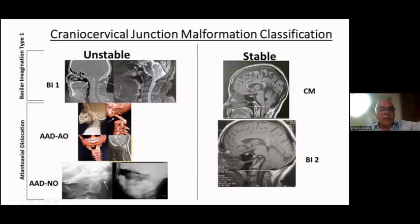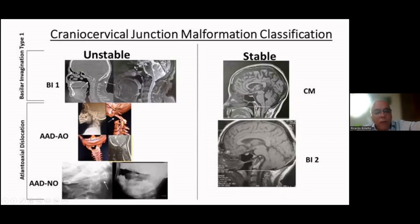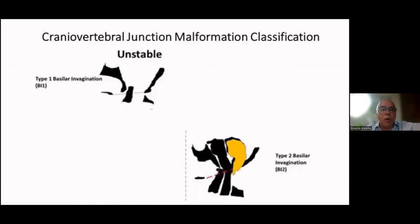In the stable branch, we can divide into all forms of Chiari malformations and type 2 basilar invagination or type B. Here are examples of type 1 basilar invagination in which the assimilation of the anterior arc of atlas is the predominant problem, and the odontoid goes through McRae's line. Instability that we can include by atlanto-axial dislocations — really dislocated with odontoid malformed or only dislocated — and here type 2 basilar invagination. The topic we will discuss today is type 1 unstable and type 2 stable basilar invagination.